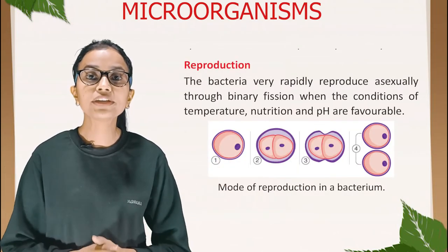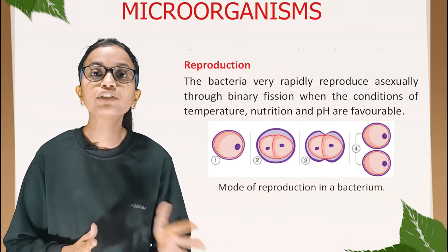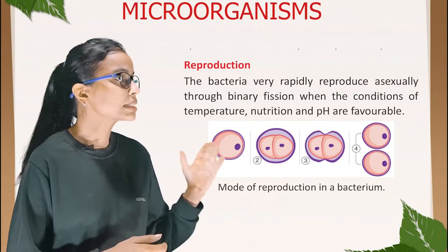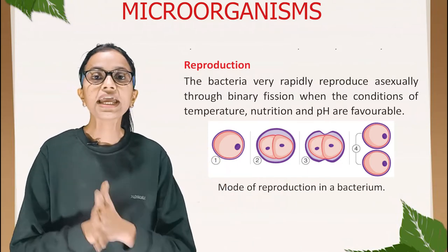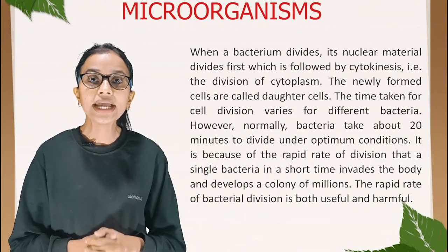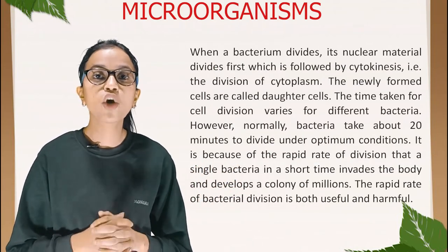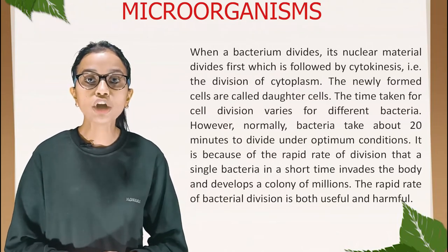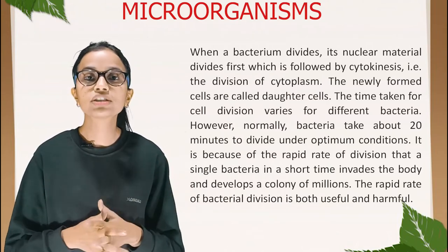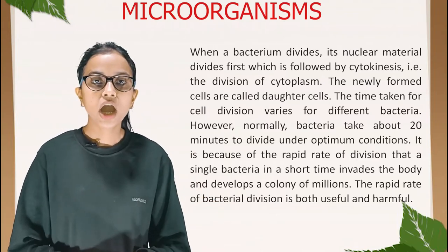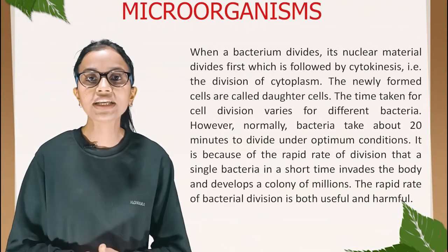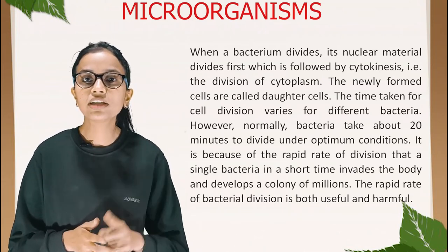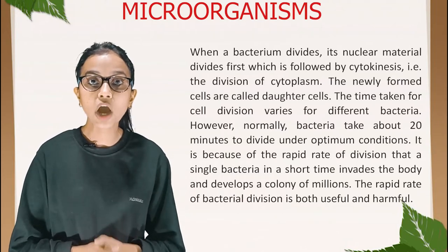Reproduction: bacteria reproduce very rapidly through binary fission when conditions of temperature, nutrition, and pH are favorable. When a bacterium divides, its nuclear material divides first, followed by cytokinesis — division of the cytoplasm. The newly formed cells are called daughter cells. Normally, bacteria take about 20 minutes to divide under optimum conditions. It is because of the rapid rate of division that a single bacterium can invade the body and develop a colony of millions in a short time.